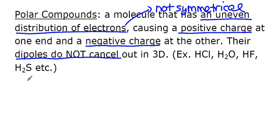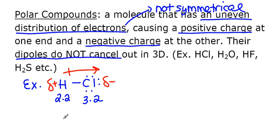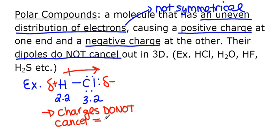Let's look at HCl. Drawing its Lewis diagram, hydrogen has an electronegativity of about 2.2 and chlorine is about 3.2, so there is definitely a dipole here. There's only one bond, so there's no way the dipole can cancel out. All the electrons get pulled towards the chlorine — this is a polar covalent bond — giving chlorine a partial negative charge and hydrogen a partial positive charge. The charges don't cancel, so HCl is a polar molecule.